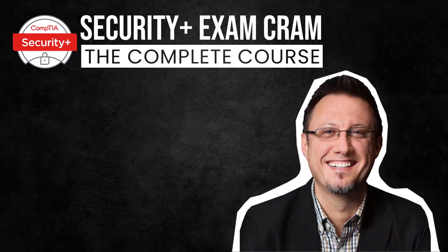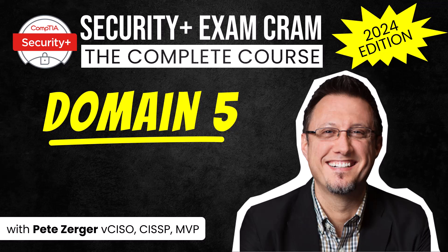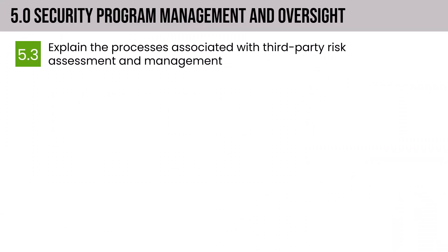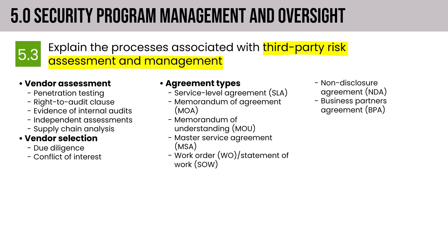Continuing coverage of Domain 5, Section 5.3 focuses on third-party risk assessment and management. We're asked to explain the processes associated with third-party risk assessment and management, covering vendor assessment activities, potential issues in vendor selection, different agreement types, the importance of vendor monitoring, the value of periodic vendor questionnaires, and the all-important rules of engagement.